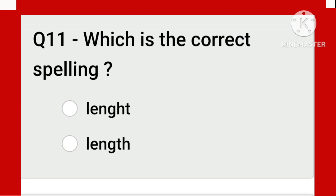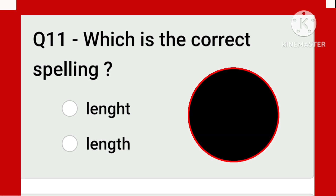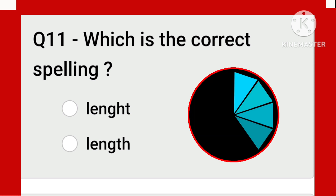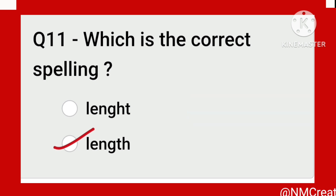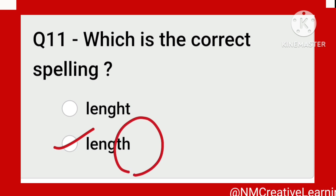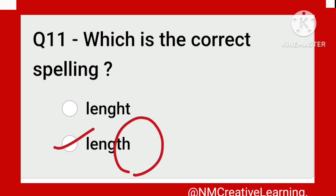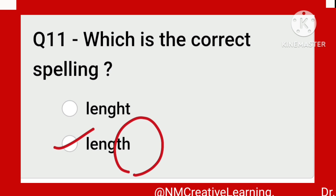Which is the correct spelling? The second one is correct: L-E-N-G-T-H, length. To remember this, keep in mind that 'th' makes the 'dh' sound. Also remember this word comes from 'long' — L-O-N-G — so N-G stays together. Correlate it with something and you will never forget the spelling.